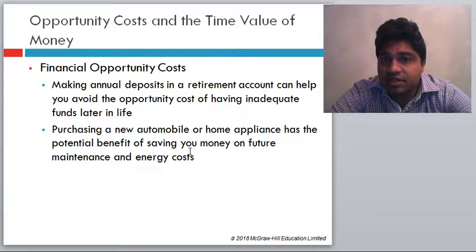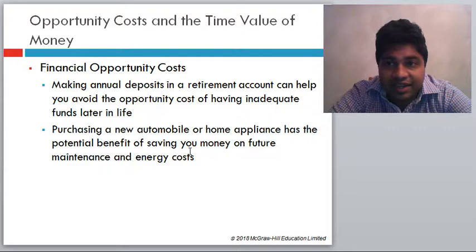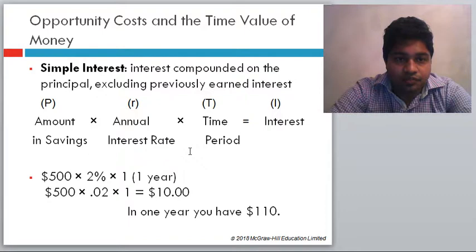Making annual deposits in a retirement account can help you avoid the opportunity cost of having inadequate funds later in life. Purchasing a new automobile or home appliance has a potential benefit of saving money on future maintenance and energy costs. The key takeaway from opportunity cost and time value of money is to consider the full implications of every financial decision.